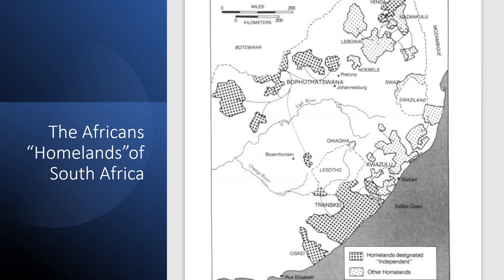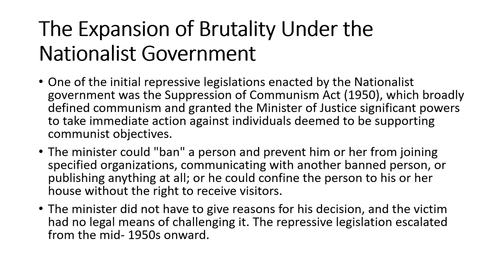Another well-known removal took place in District Six, adjacent to the center of Cape Town, which had been a vibrant community predominantly inhabited by colored individuals since the early 19th century. The homes in District Six were demolished and the residents were relocated to the sandy and windswept Cape Flats. In Durban, many Indians also faced severe displacement, losing their homes and businesses in areas designated for white occupation.